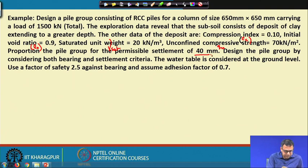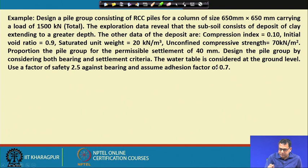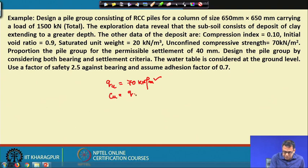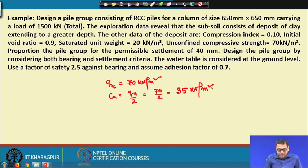Since the unconfined compressive strength of the soil is 70 kN/m², the undrained cohesion Cu = qu/2 = 70/2 = 35 kN/m².